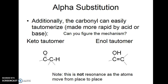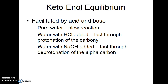Alpha substitution is when you put something in place of the hydrogen alpha to the carbonyl carbon. The enol forms from the keto form through tautomerization. This tautomerization is always more rapid in the presence of acid or base. In pure water, you have a very slow reaction, but with a catalytic amount of hydrochloric acid or base, there is a very rapid equilibrium between the keto and enol forms.